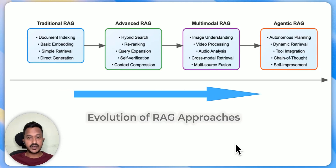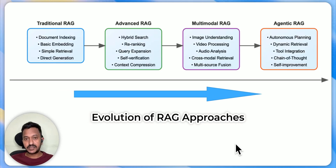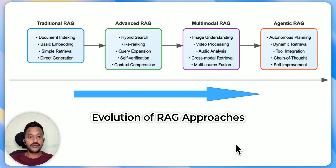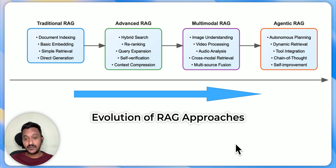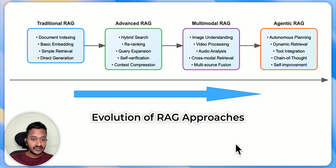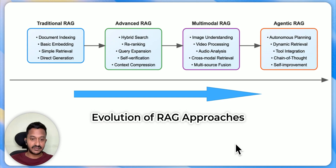Hey guys. When it comes to retrieval augmented generation, we have come a long way from just doing traditional RAG pipelines to advanced RAG, to multimodal RAG, to agentic RAG, what we see today. It all started with basic embedding, simple retrieval, and direct generation in the traditional RAG.